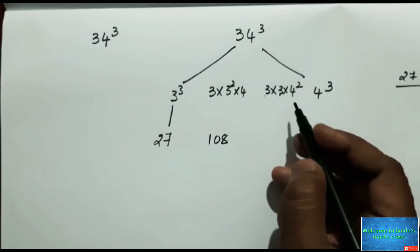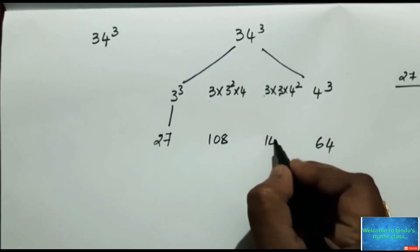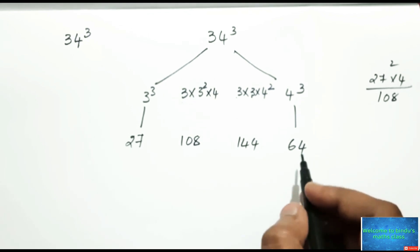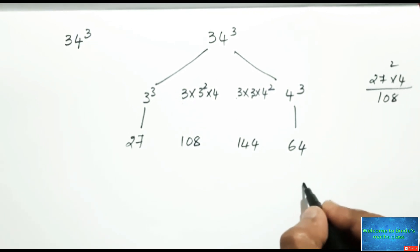And here 3 times 3 is 9, 9 into 4 square, 4 square means 16, 9 times 16 is 144. Please write down like this.